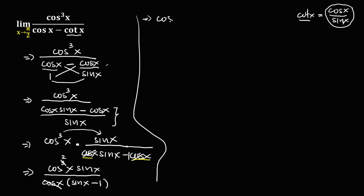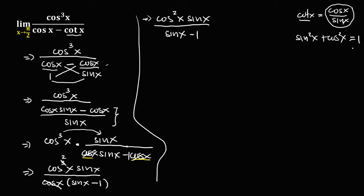After cancellation, we have cosine squared x times sine x, over sine x minus 1. Now we apply the Pythagorean identity: sine squared x plus cosine squared x equals 1. Solving for cosine squared x by transposing sine squared x gives us cosine squared x equals 1 minus sine squared x.